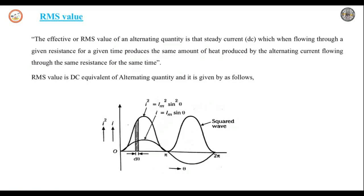RMS value with respect to AC is the steady current — that is DC current — when flowing through a given resistance for a given time, produces the same amount of heat produced by the alternating current when flowing through the same resistance for the same time. Let us consider a resistance.